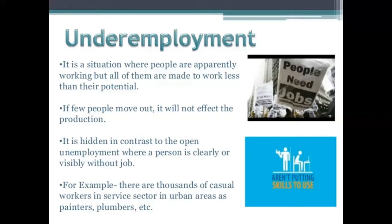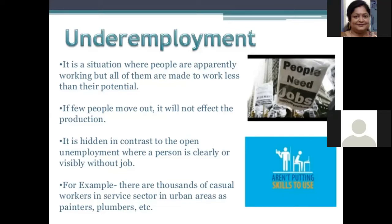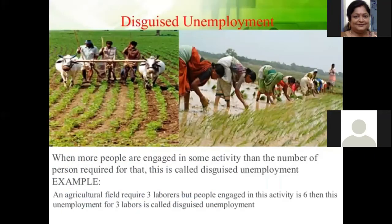For example, in a construction site, I took 25 laborers to work. Two laborers said they wouldn't accept the wages and left, so I took 23 laborers to do the work of 25 — the work still gets done. Underemployment is also a situation where people are working but made to work less than their potential. Now let us see disguised unemployment.